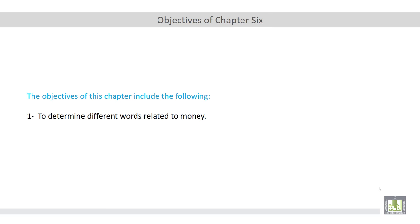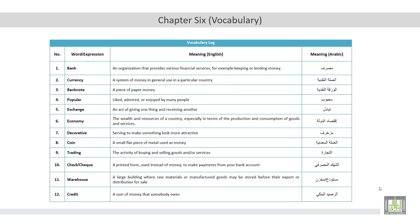The main objective of this chapter is to determine different words related to money. These words can be found in the vocabulary log. The words are bank, currency, banknote, popular, exchange, economy.